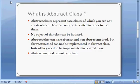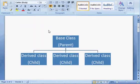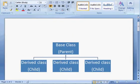Starting with the definition: an abstract class represents a base class of which you cannot create an object — these can only be inherited in order to use them. The first question from the definition is: what is a base class? A base class is a parent class which is implemented or inherited by different child classes, which we call derived classes.